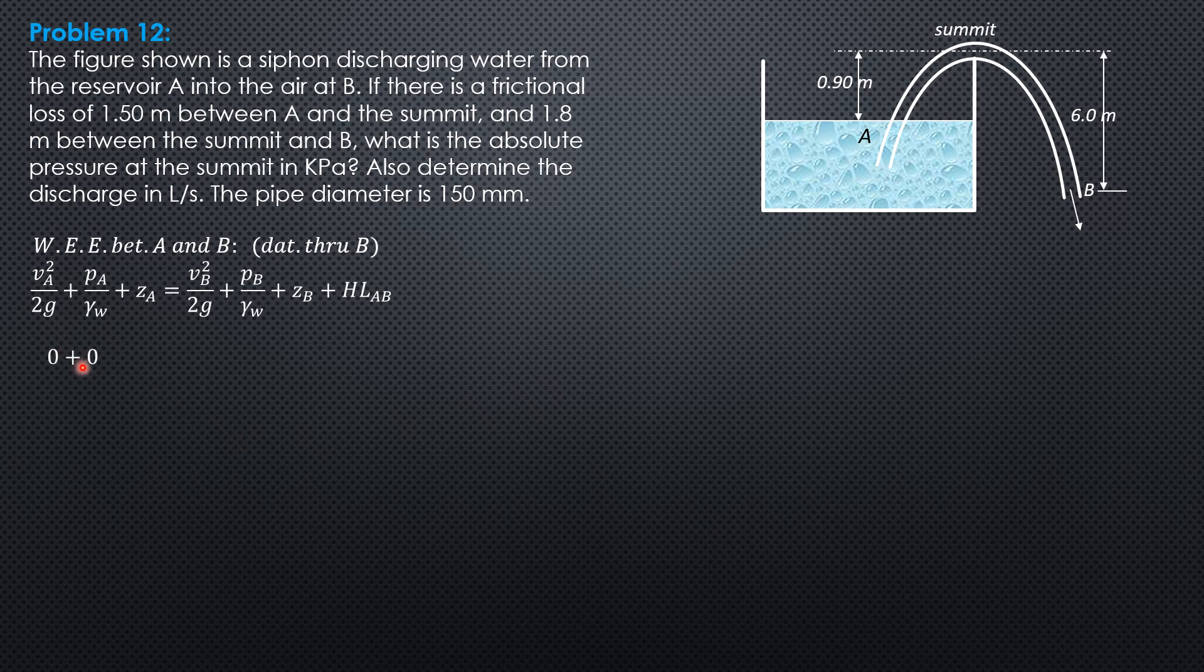So substitute 0 plus 0 plus 5.1 equals velocity head at B, pressure head at B, 0, elevation head 0, and this is the head loss, total head loss.